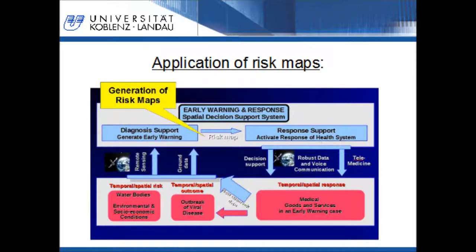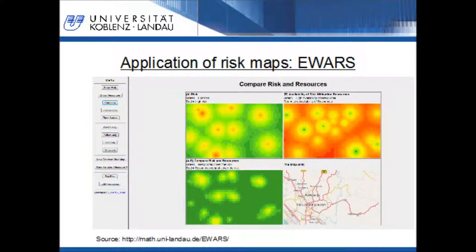Here we can see an example for an early warning and response cycle and where my work is integrated and how risk maps can be used. They are used in the steps between the generation of an early warning and the step called activation of the response of the health system. This slide shows a prototype of an early warning and response system and a potential application of risk maps. The map on the upper left side is a randomly created risk map for an epidemiological problem. The map on the upper right side shows the spatial distribution of available resources to solve this problem.